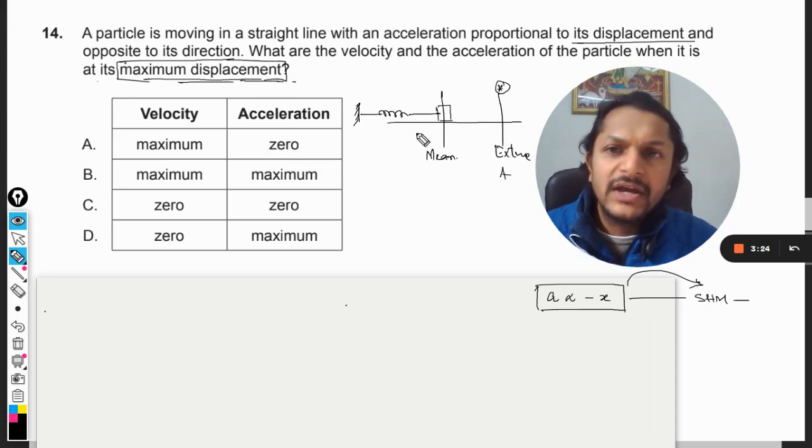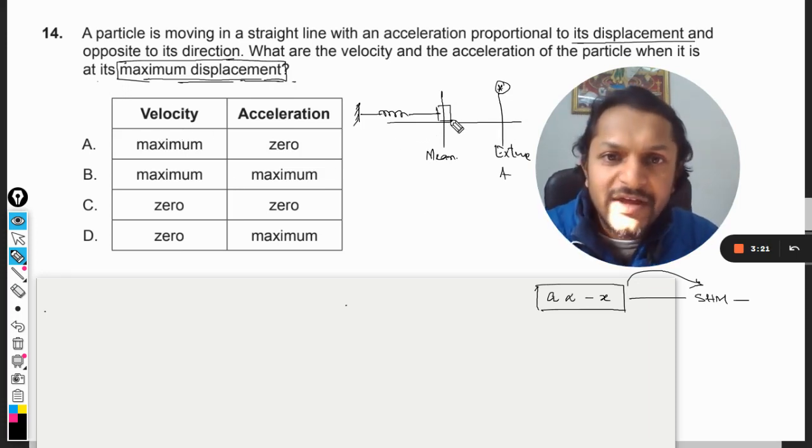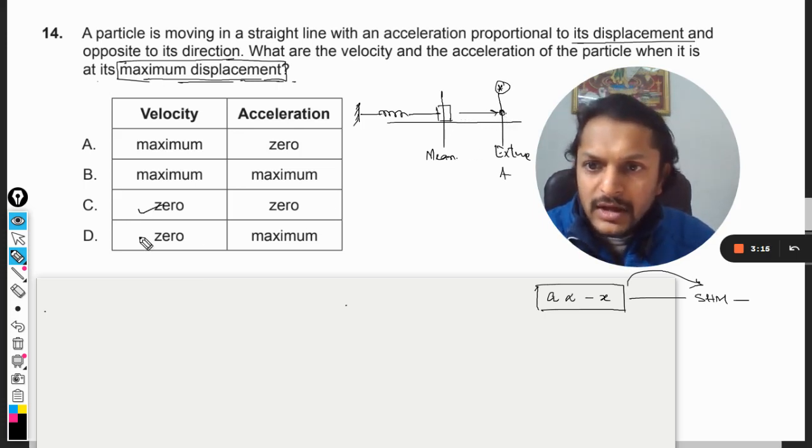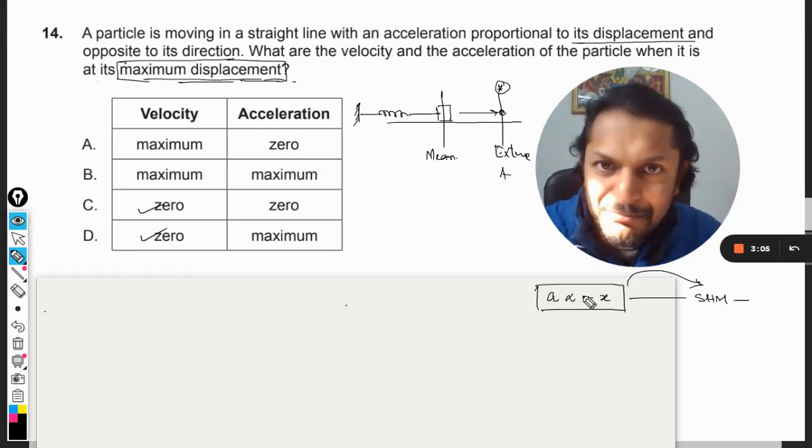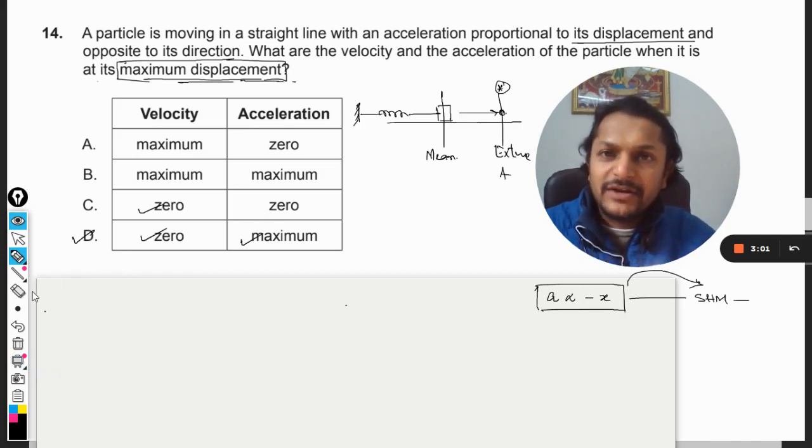Now, so what is the velocity? We all know that when this body will reach at the maximum point, the velocity will be zero and the acceleration will become maximum. Why? Because it is directly proportional to displacement. So at maximum displacement, acceleration will be maximum. So it becomes this. So D will be the correct answer.